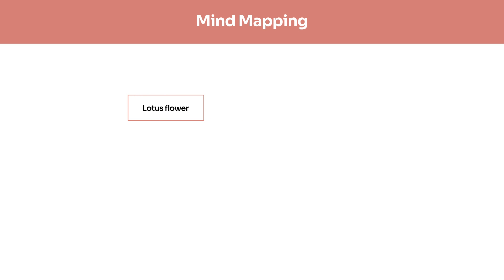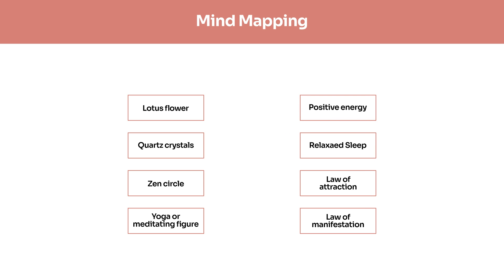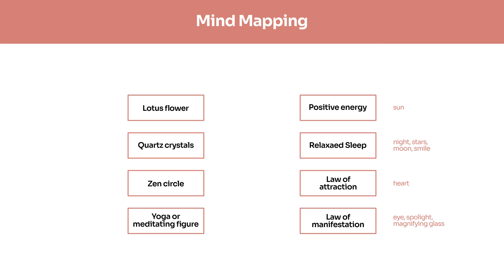The important keywords extracted from the design brief include: lotus flower, quartz crystal, Zen circle, yoga or meditating figure, positive energy, relaxed sleep, law of attraction, and manifestation. To represent positive energy we can use elements like a sun. For relaxed sleep we can use night, stars, moon, or a smile. For law of attraction we can use a heart symbol, and for manifestation a spotlight or magnifying glass. Let's continue with the sketching process.